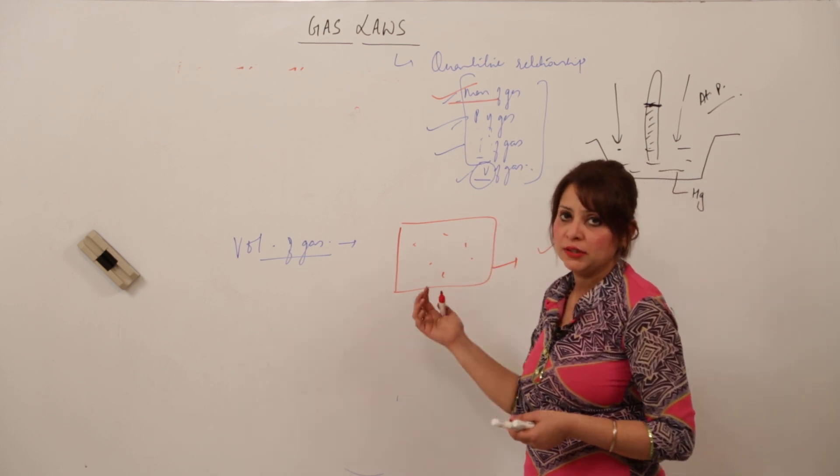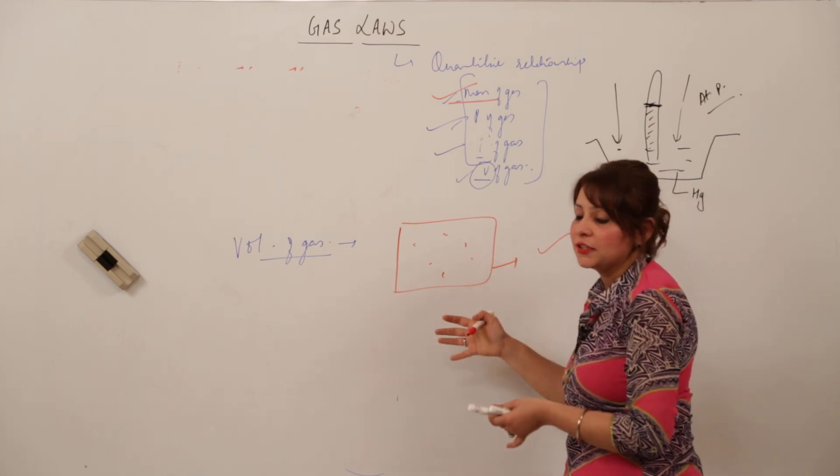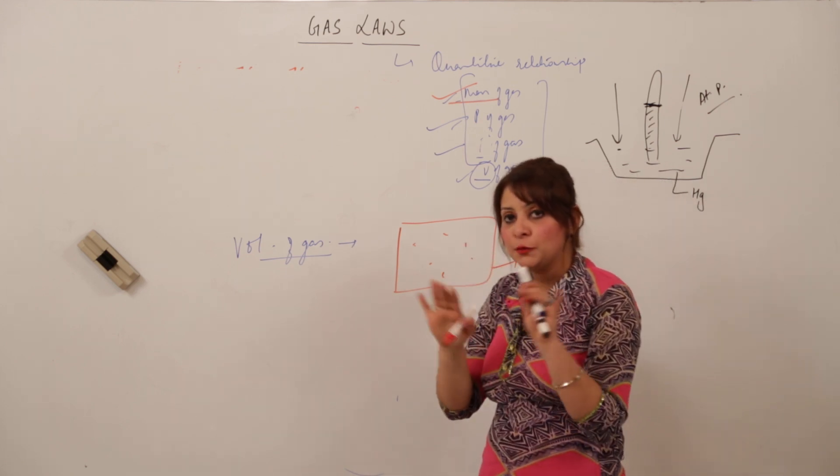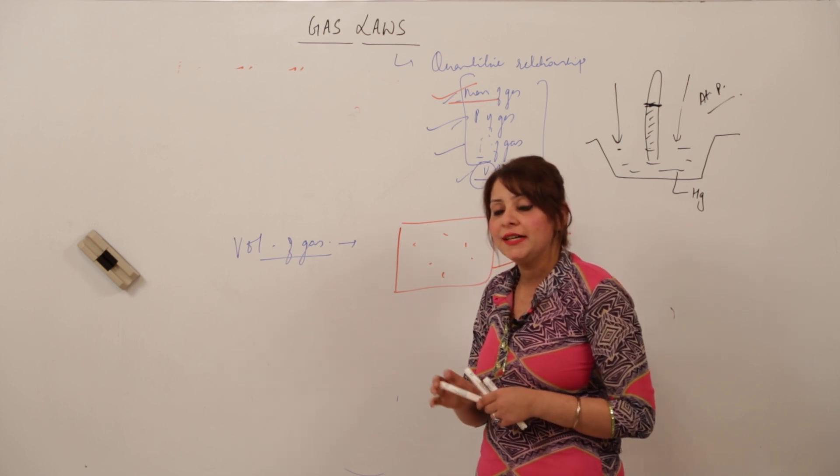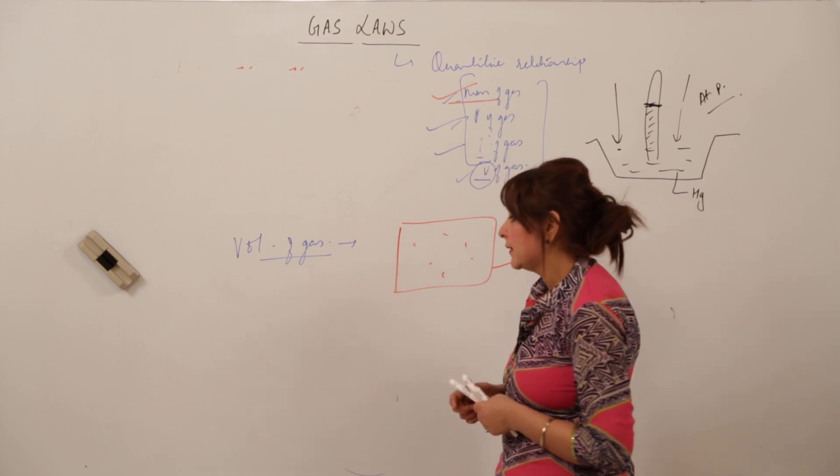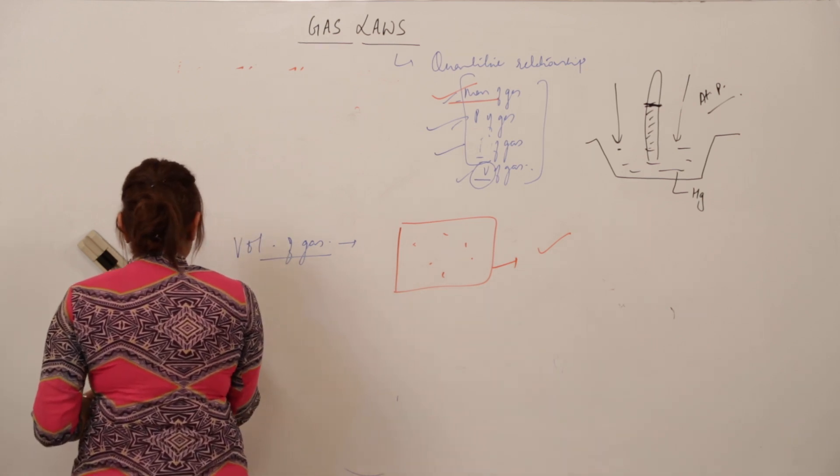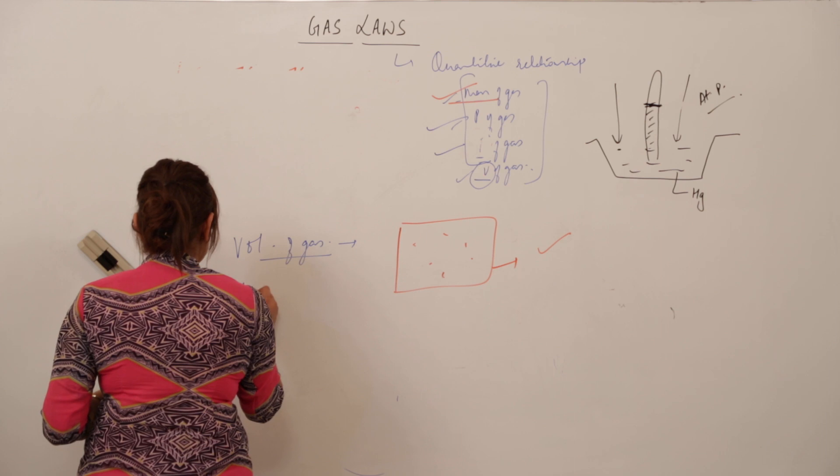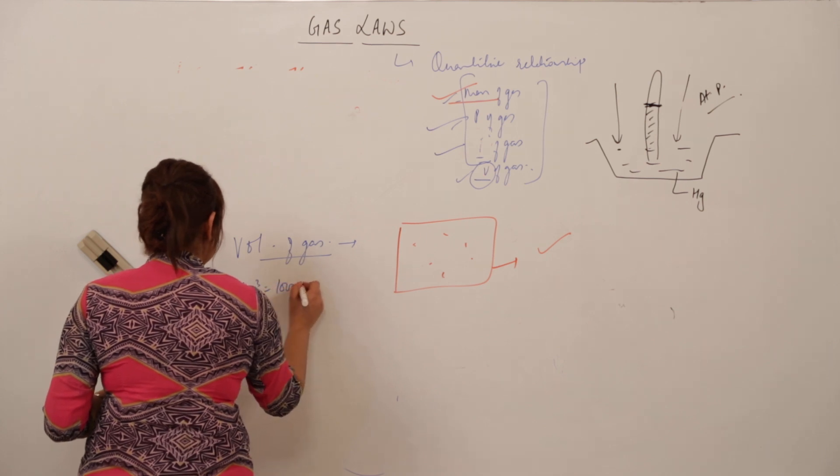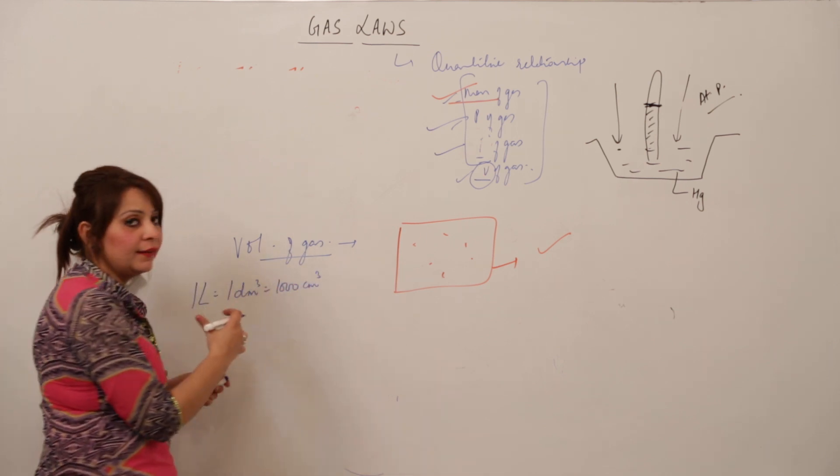So that means the volume of this container I've taken will be equal to the volume of the gas because the gas occupies the space completely. So volume of the container indicates the volume of the gas. And again the units which are used for it is liters. One liter is equal to one decimeter cube is equal to thousand centimeter cube.